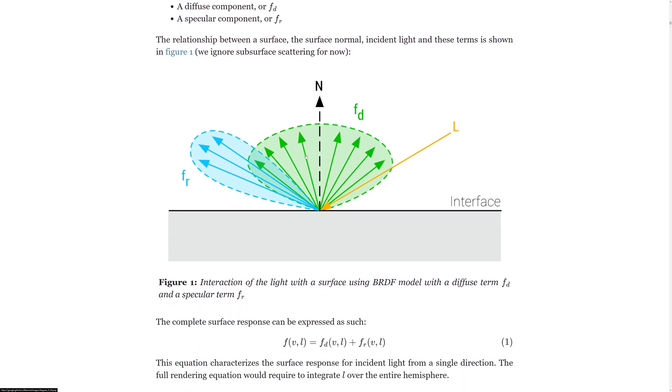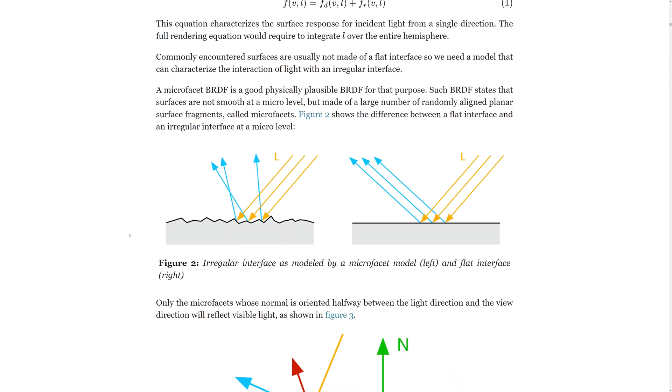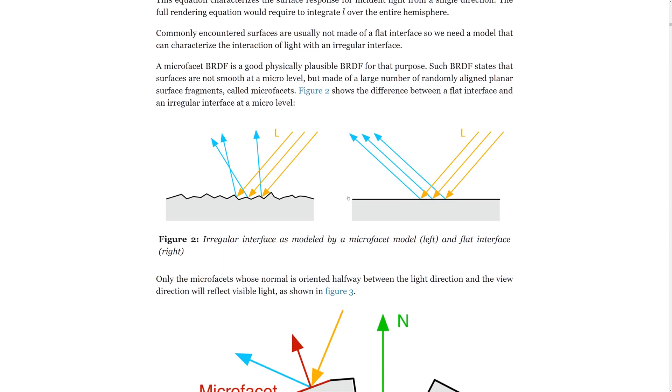So looking at the BRDF we see that it has a diffuse part and a specular part. The diffuse part scatters the light in all directions. The specular part depends on the direction of incoming light. Moreover the scattering of the specular reflection depends on how smooth the surface is. For a perfect mirror the incoming light is reflected in the exact same angle mirrored about the surface normal.